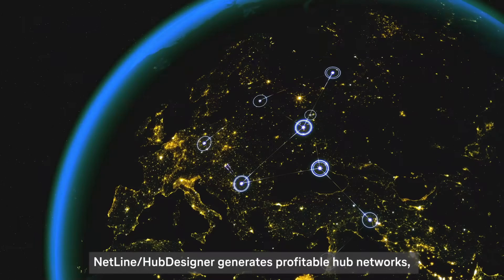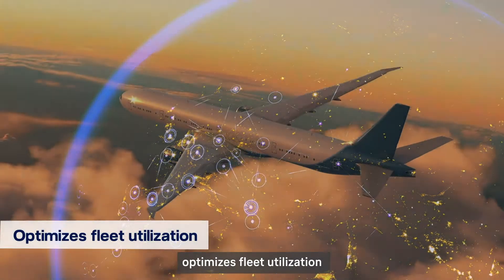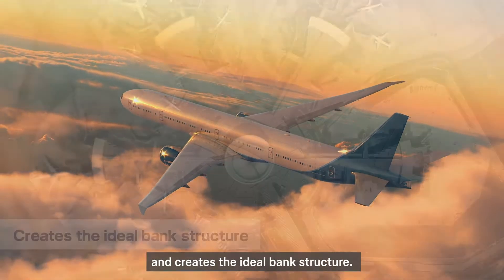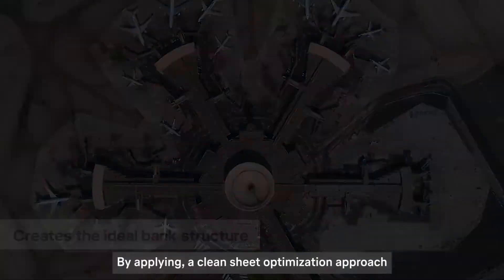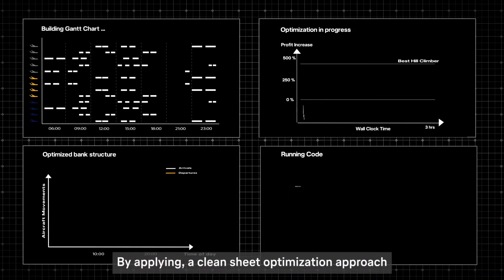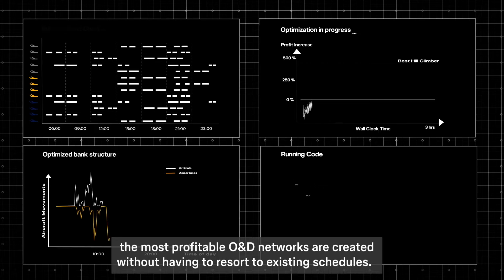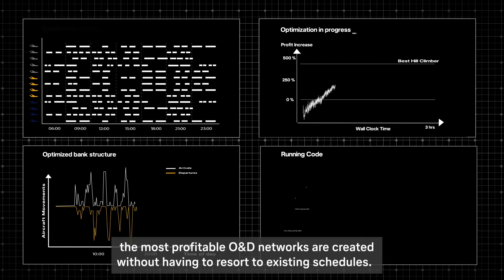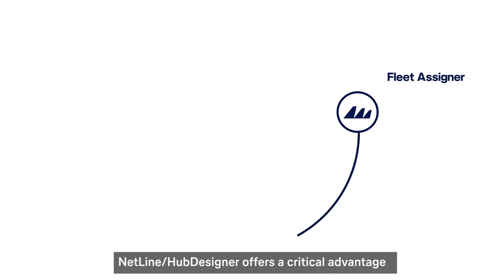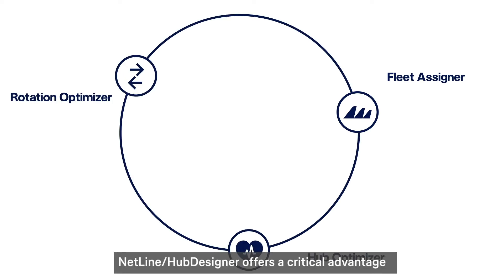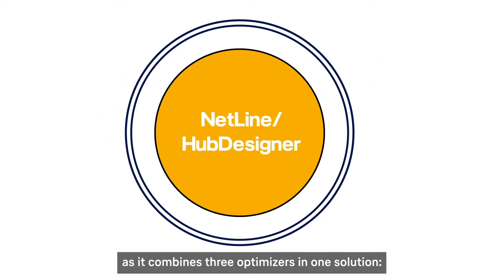Netline Hub Designer generates profitable hub networks, optimizes fleet utilization and creates the ideal bank structure. By applying a clean sheet optimization approach, the most profitable O&D networks are created without having to resort to existing schedules. Netline Hub Designer offers a critical advantage as it combines three optimizers in one solution.